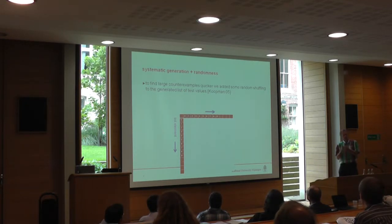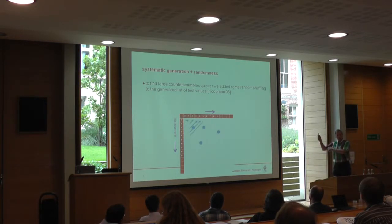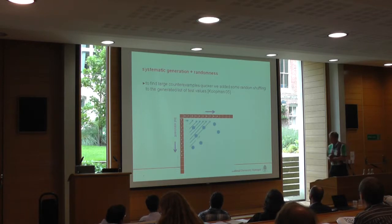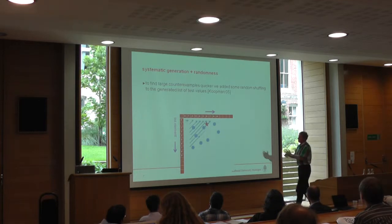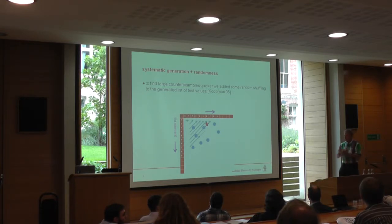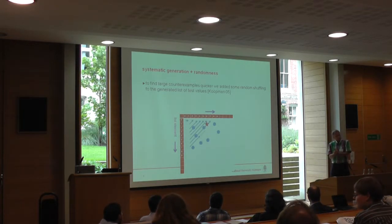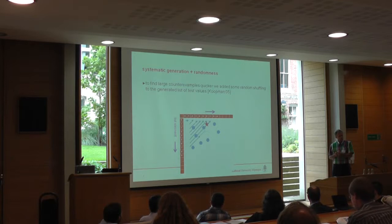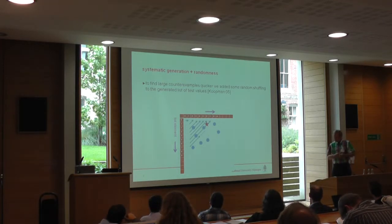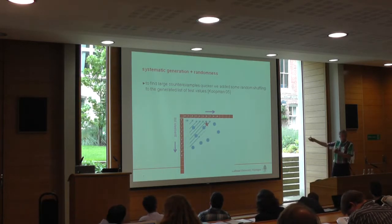Maybe we should mix things: do some systematically and add some randomness in order to generate large lists. Add some random things and some systematic things. The problem is balance. The only problem is how much randomness do I need? If I add much randomness, I lose the good things of systematic generation. If I use many systematic things and a few random test cases, then perhaps I still miss those large test cases.